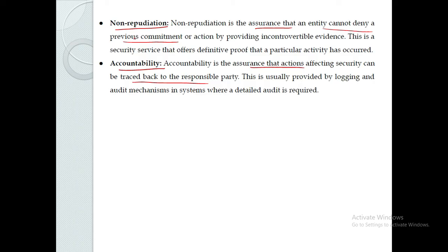These are the five services provided by cryptography: first, confidentiality; second, integrity; third, authentication — which has two types: entity authentication and data origin authentication (message authentication); fourth, non-repudiation; and fifth, accountability. In the next video, we will cover the different types of cryptography. Thank you.